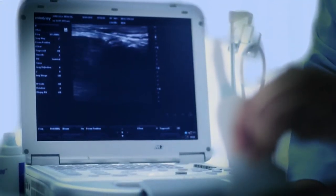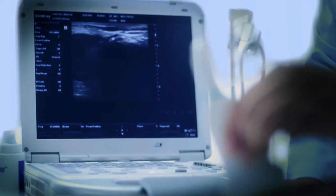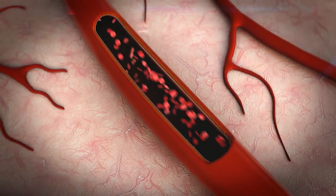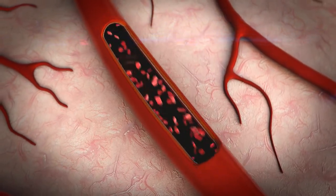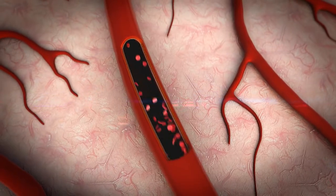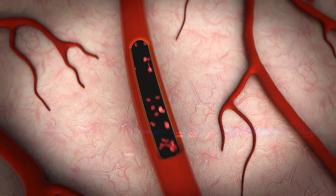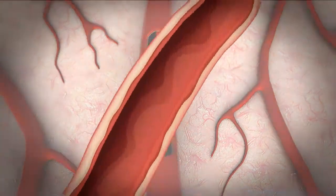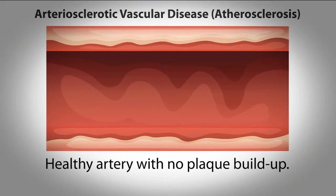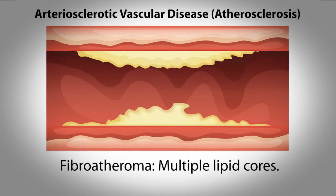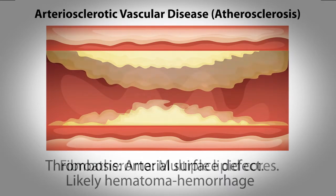Endothelial dysfunction precedes the structural atherosclerosis that leads to thrombosis and advanced vascular disease. FMD detects functional as opposed to structural changes to the endothelium, meaning that FMD can detect both positive and negative changes to endothelial function from even very short-term interventions. The FMD response measured at the brachial artery represents systemic endothelial function that can be extrapolated to reflect phenomena related to vessels at risk for atherosclerosis.